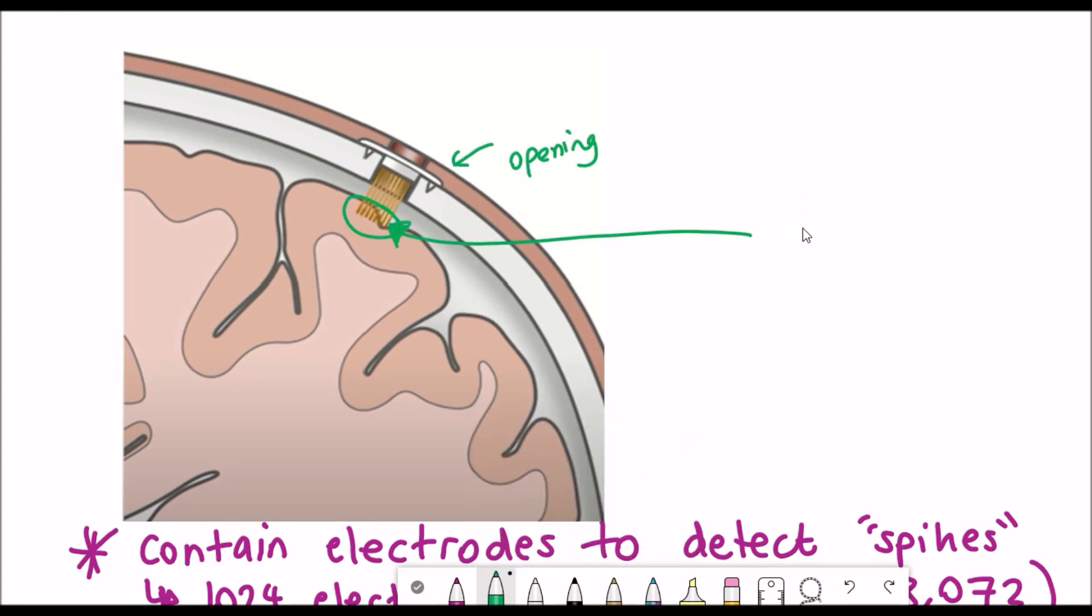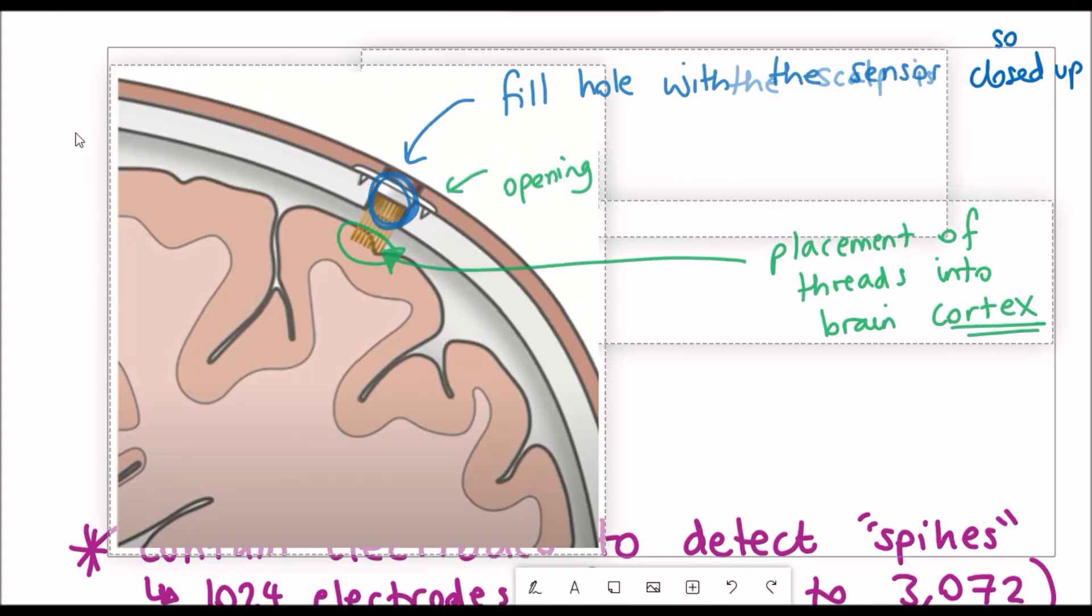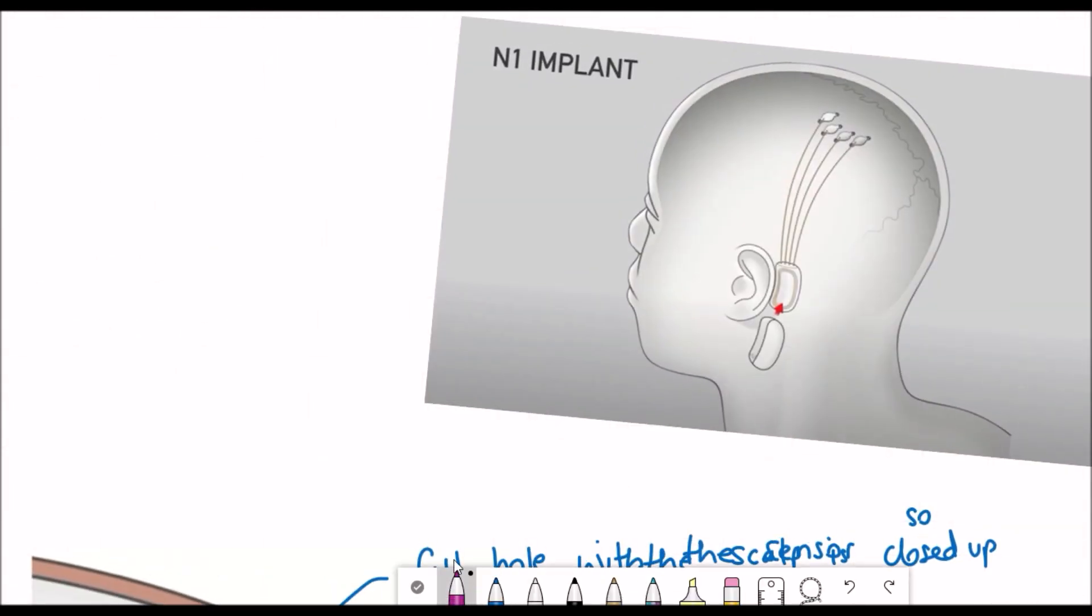As you can see in this figure you can see that the opening is then filled by the sensor so that the scalp can be closed up and then you can see how the threads are placed into the brain cortex. This procedure would be so simple that you wouldn't have to shave any hair which is a good thing.